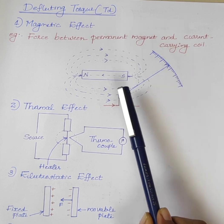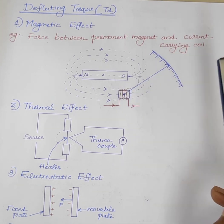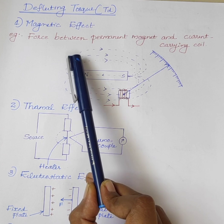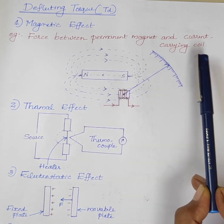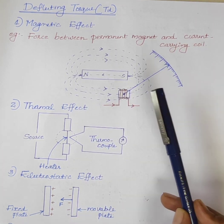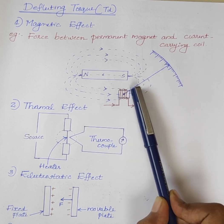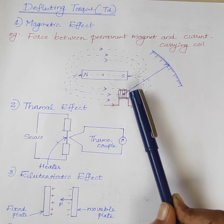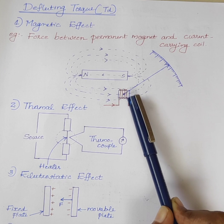We are considering only one example: force between permanent magnet and a current carrying coil. Consider a current carrying coil. When current passes through the coil it acts as an electromagnet.